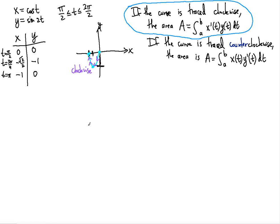Let's figure out x prime of t, since we already know y(t) is given. Differentiating x of t equals cosine t gives x prime of t equal to negative sine t. So the area integral will be from a to b — and a is pi over 2. We're looking for the entire area enclosed by the curve, so let's finish the table.